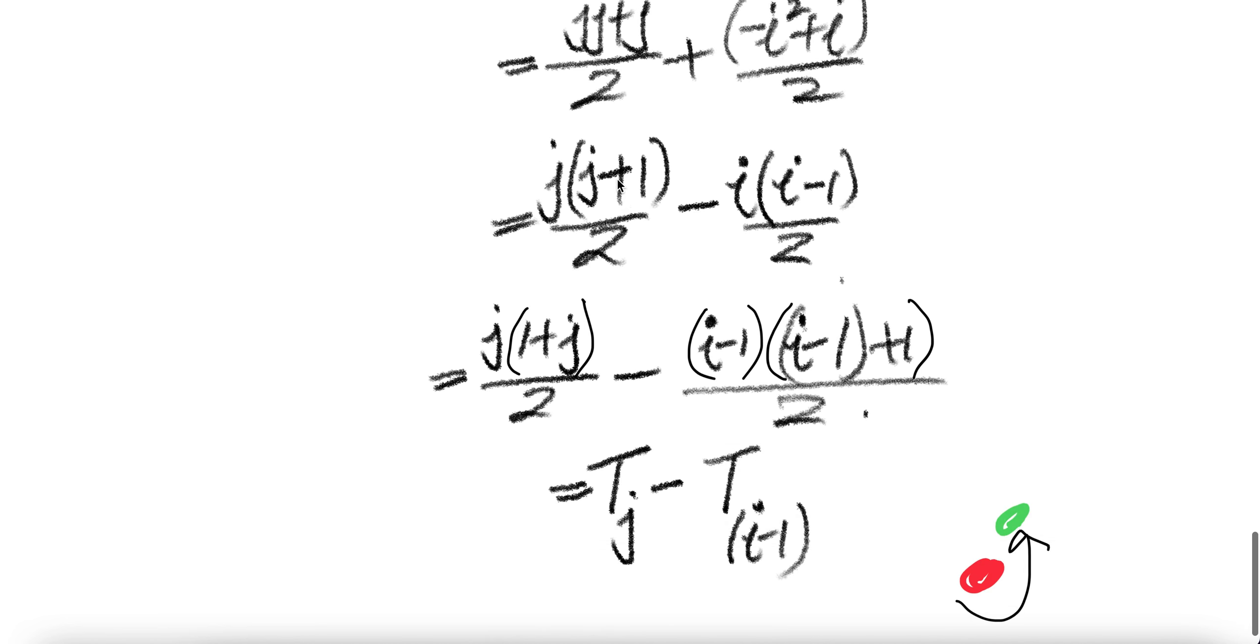This piece is just write one plus J. This one, you can write this I as I minus one plus one.